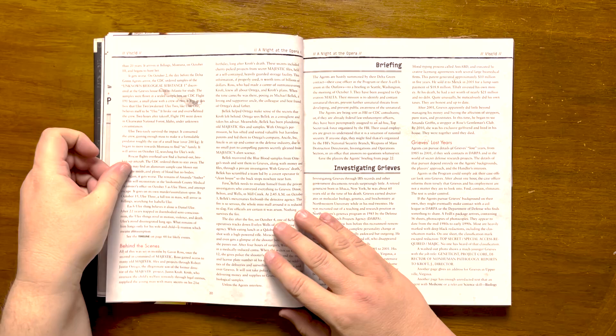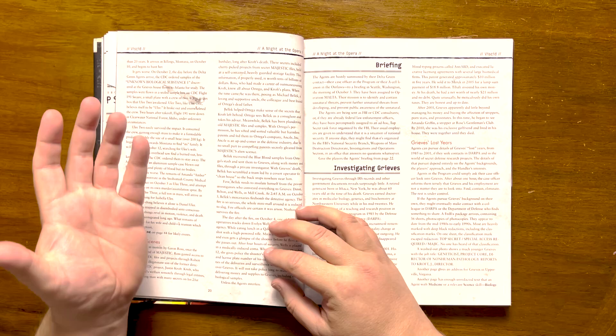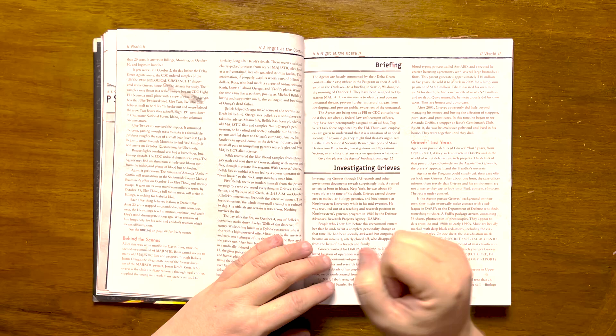If possible, the situation is actually worse than it seems. On October 2nd, the day before Delta Green had contacted, the CDC ordered a sample of the unknown biological substance found in Greaves' house to be flown to Atlanta for study. During the flight, Uli thing number two awakened and overwhelmed the two-man crew, causing it to crash in Clearwater National Forest, Idaho.